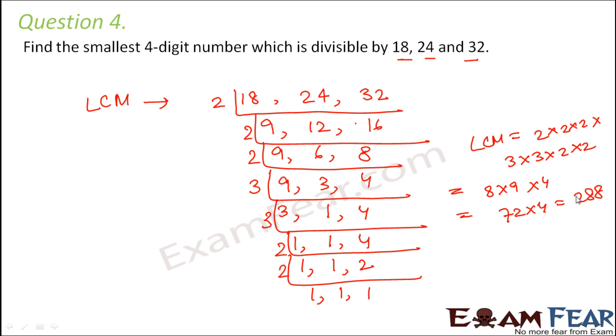So this is the least common multiple but what do we have to find? We have to find the smallest 4-digit number but this is a 3-digit number. So in order to find greater multiples after 288, we will find multiples of 288.